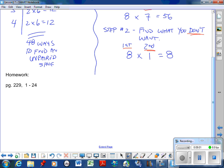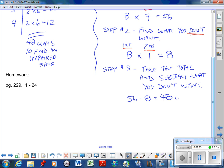Step three: I take the total and subtract what you don't want. And what that does is that gives you what you want. Therefore, 56 take away eight is 48 ways.